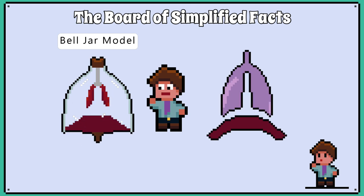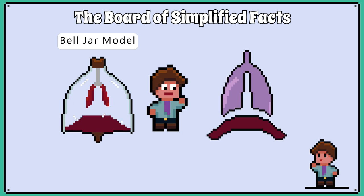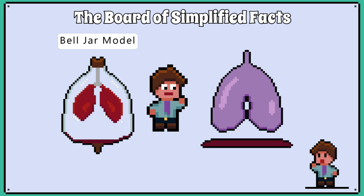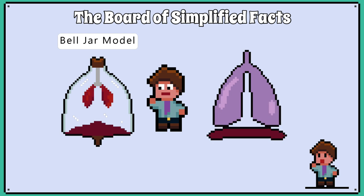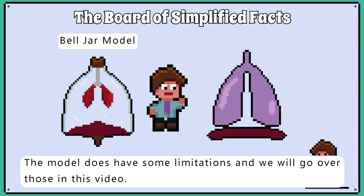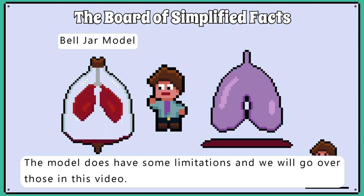The bell jar model is a great way to demonstrate how the diaphragm contracts and relaxes, resulting in the lungs inflating and deflating. The model does have some limitations and we will go over those in this video.